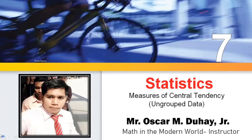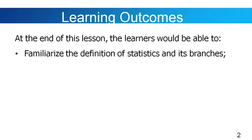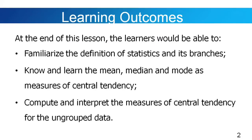For today's lesson, we're going to familiarize ourselves with the definition of statistics and its two branches. And of course, we're going to know the measures of central tendency for the ungrouped data. At the end of this lesson, the learners would be able to: first, familiarize the definition of statistics and its branches; second, know and learn the mean, median, and mode as measures of central tendency; and lastly, compute and interpret the measures of central tendency for the ungrouped data.